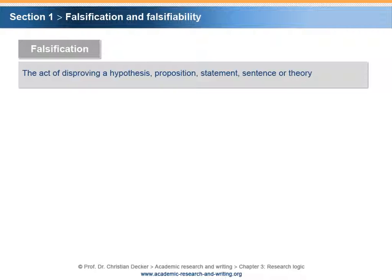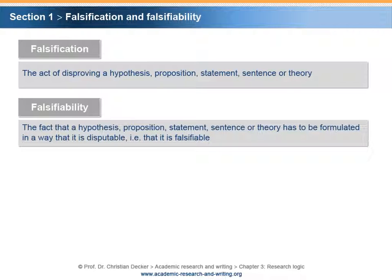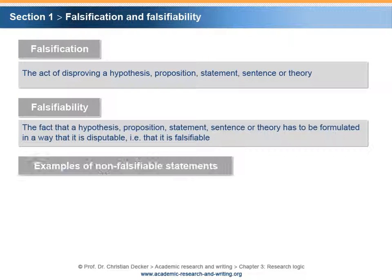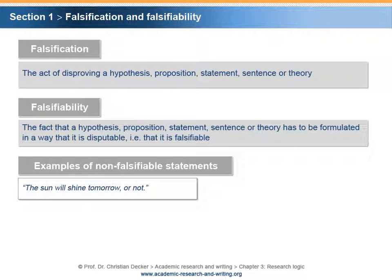We already know that falsification is the act of disproving a hypothesis, proposition, statement, sentence or theory. In an academic or scientific context, the attribute of falsifiability becomes important. Falsifiability means that a hypothesis, proposition, statement, sentence or theory has to be formulated in a way that it is disputable — meaning that it is falsifiable. For example, the sentence 'the sun will shine tomorrow or not' is non-falsifiable because it is tautological.